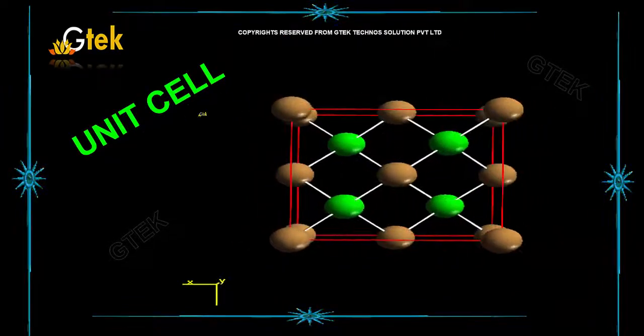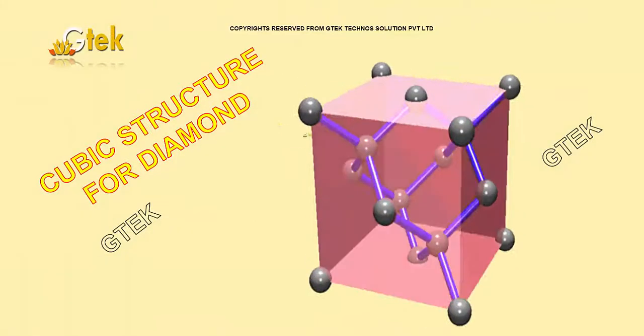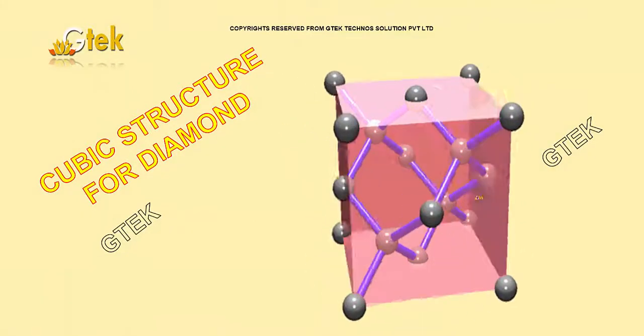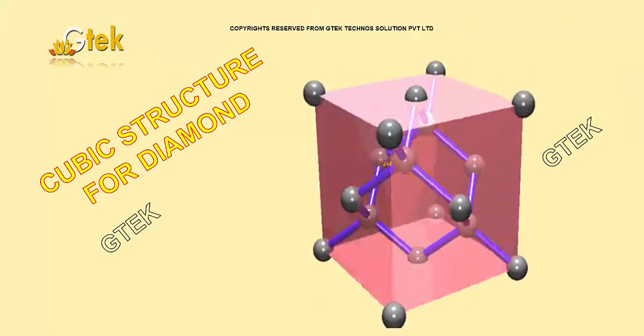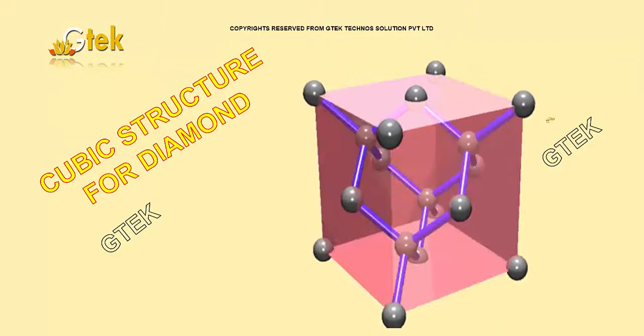Here is the theory of how the unit cells are, followed by the cubic structure for diamond. This is the structure of diamond. Let's see more on this and how we are able to calculate the contribution of an atom for designing the crystal structure.